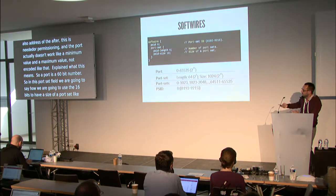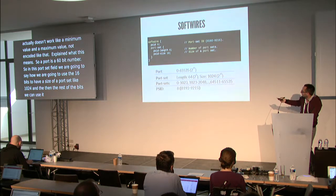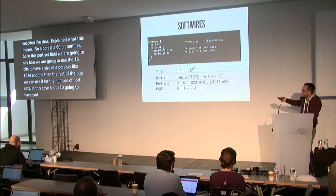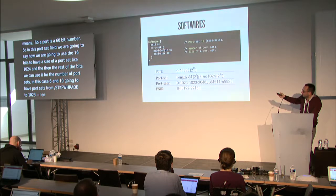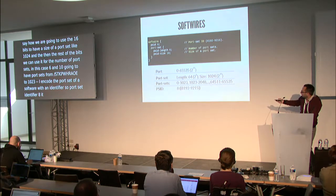The remaining bits can be used for the number of port sets. For example with values 6 and 10, you get port sets from 0 to 1023, then 1024, then 2048, and so on. The port set is identified with a Port Set Identifier — PSID 8, for instance, corresponds to specific port values.